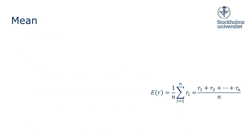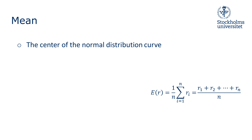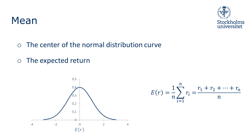The mean or the average is simply calculated by summing up all the observed values — which in our case is returns — and dividing by the number of observations, which in our case is months. Visually, this is the center of the normal distribution curve, and in Finance, this is our expected return.